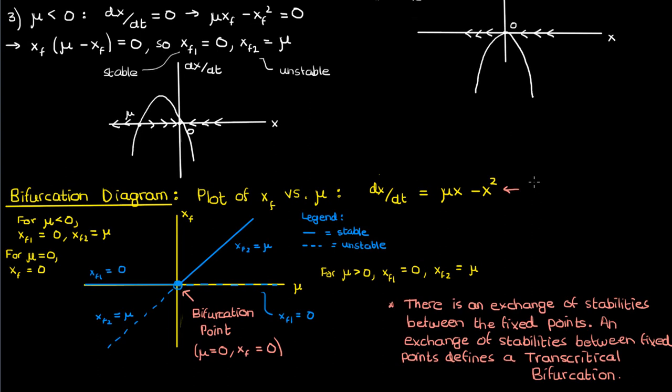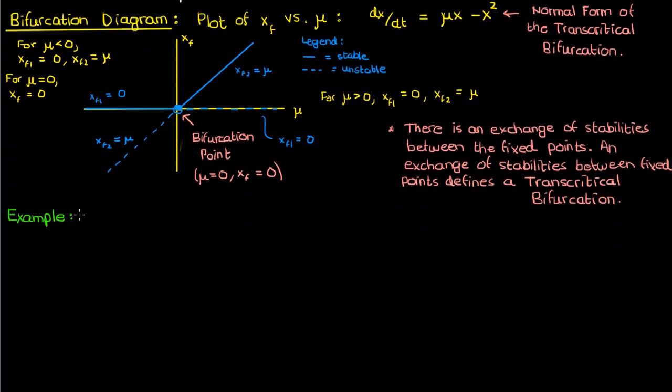The dynamical system dx/dt equals μx minus x² isn't the only one with a transcritical bifurcation — it's just the most basic one. In fact, it's the normal form of the transcritical bifurcation. As we discussed in the previous video, what I mean by normal form is that any dynamical system with a transcritical bifurcation will look like dx/dt equals μx minus x² near the area of the transcritical bifurcation.